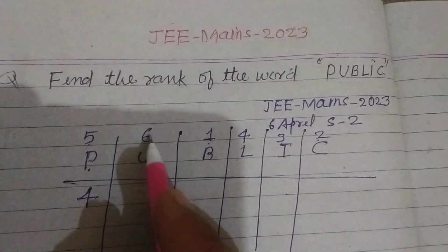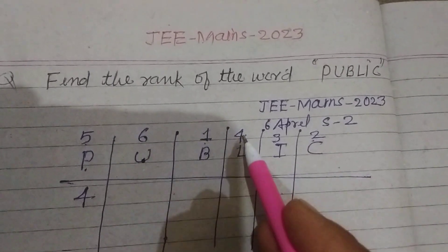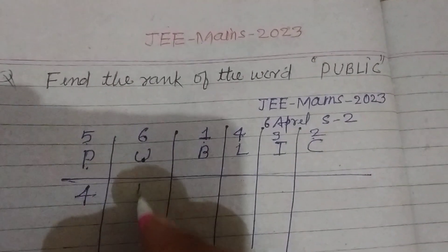Now U, six. How many right side numbers less than six? One, four, three, two. Also four.